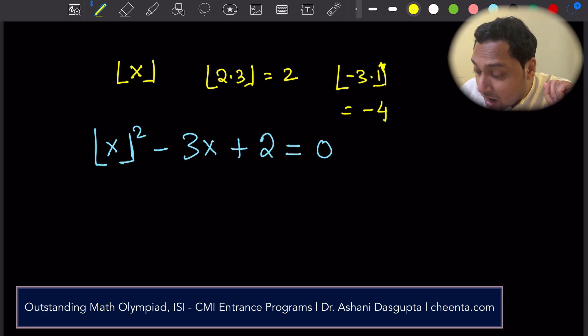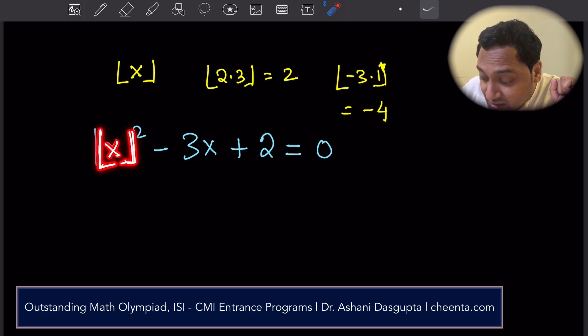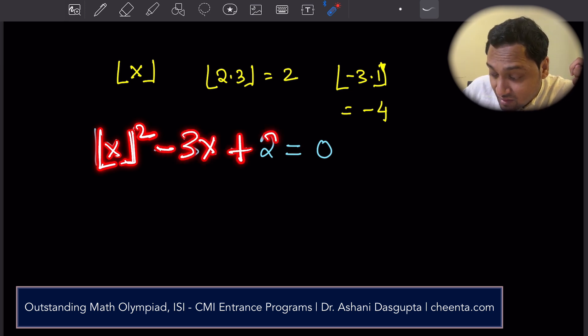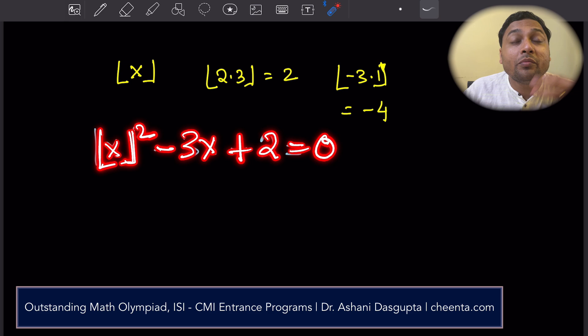We want to see how many such values of x are there such that integer part of x when squared minus 3 times x itself plus 2 is 0. How many solutions are there of this equation?